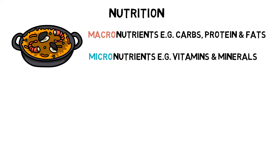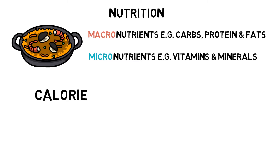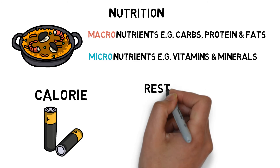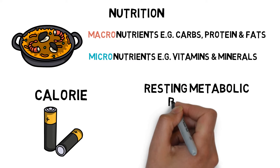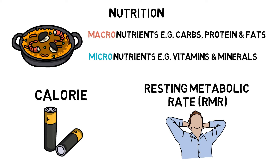One of the primary functions of consuming these nutrients is to provide us with energy. The most common unit of energy used in nutrition is the calorie, defined by the amount of heat energy required to raise the temperature of one gram of water by one degree Celsius. Resting metabolic rate is the amount of energy expended while at rest, representing the minimal energy required to sustain vital bodily functions such as blood circulation and respiration.